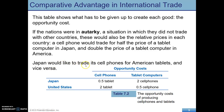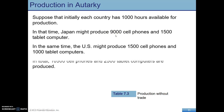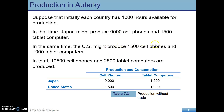Japan would like to trade its cell phones for American tablets based on these opportunity cost figures. Let's say each country has 1,000 hours available to produce. In that time, Japan could produce 9,000 cell phones and 1,500 tablets, while the U.S. could produce 1,500 cell phones and 1,000 tablets — a total of 10,500 cell phones and 2,500 tablets. This is production without trade, in autarky.